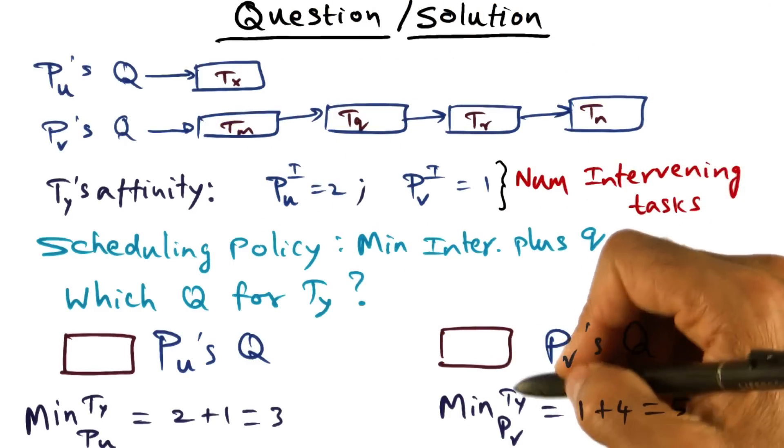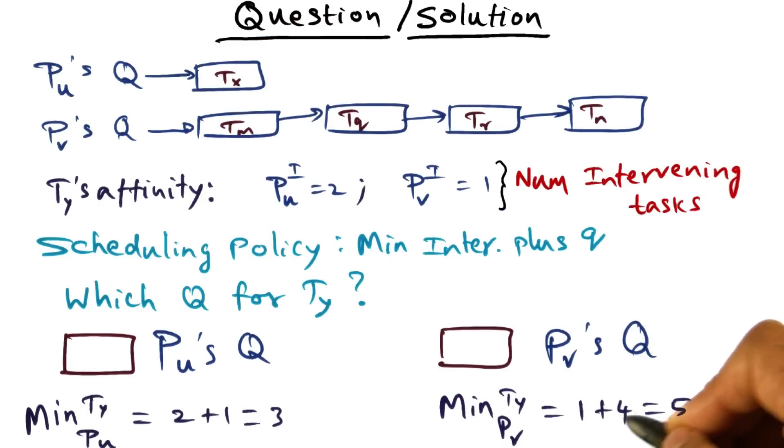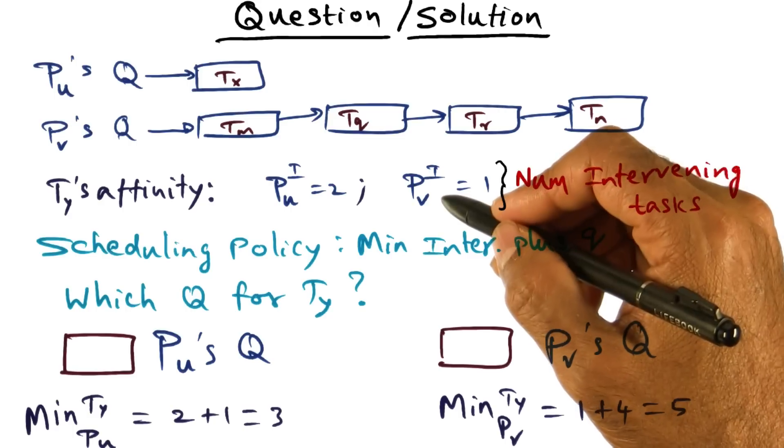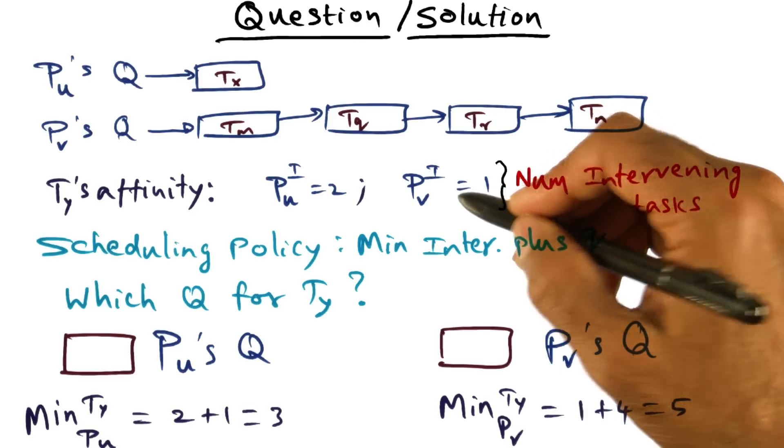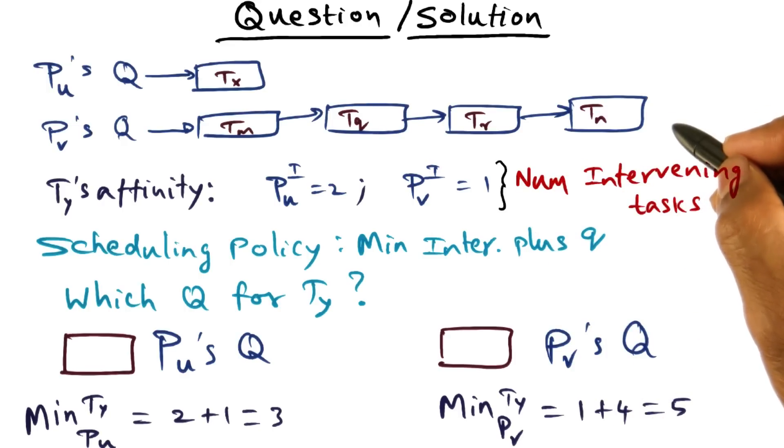So when ty is put on pv's queue, it's going to be stuck at the end of this queue, which means that the amount of intervention that is going to happen for ty on pv by the time it gets to run is actually the affinity index for ty with respect to pv currently, as well as the intervention that's going to happen by the time it actually gets to run. So that's four. So the overall i plus q is five for this guy and three for this guy.